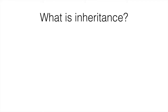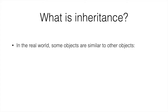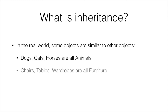So what is inheritance? Inheritance is just like in the real world when some objects are similar to other objects. For example, dogs, cats and horses are all animals. Chairs, tables and wardrobes are all furniture. And all animals share some characteristics — for example, they have an age or a colour. And all furniture have some similar properties like the material they're made from or their age.